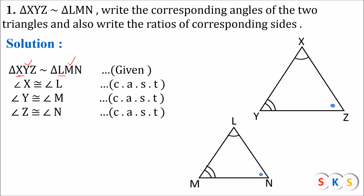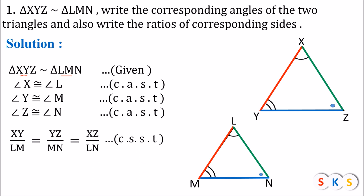Next we have to write the ratio of corresponding sides. You can see that XY and LM correspond to each other. The first two letters of triangle XYZ are XY, and the first two letters of triangle LMN are LM, so XY corresponds to LM. Similarly, YZ corresponds to MN, and XZ corresponds to LN. So we can write: XY upon LM equals YZ upon MN equals XZ upon LN. Reason: CSST — corresponding sides of similar triangles.